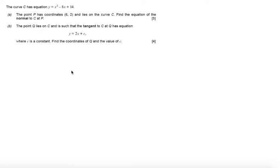The curve C has equation y equals x squared minus 8x plus 14. The point P has coordinate 6, 2 and lies on the curve C. Find the equation of the normal to C at P.